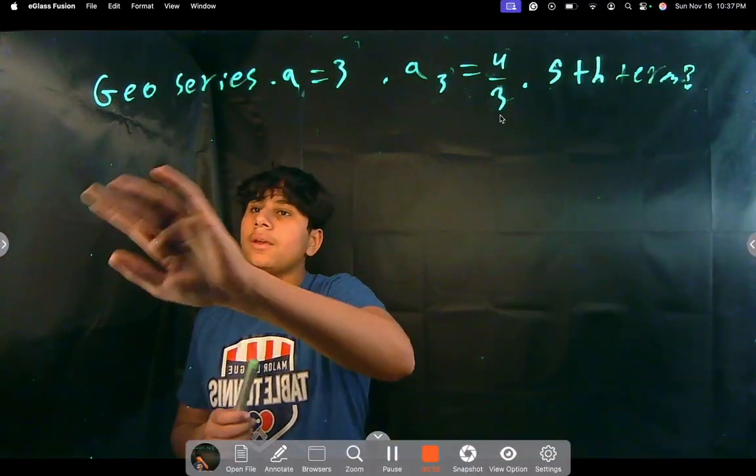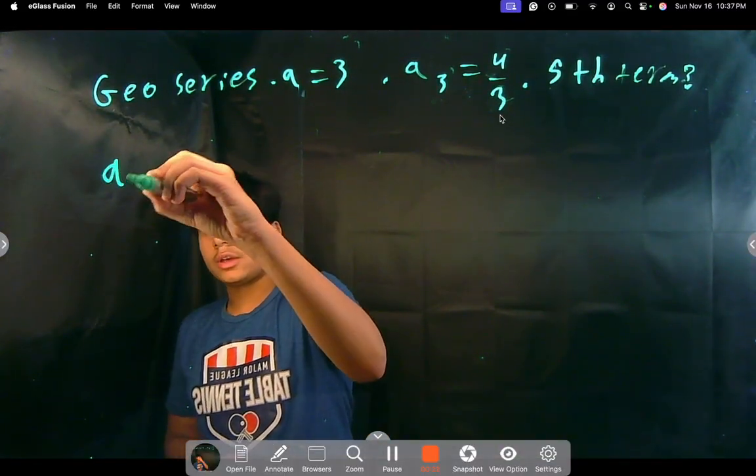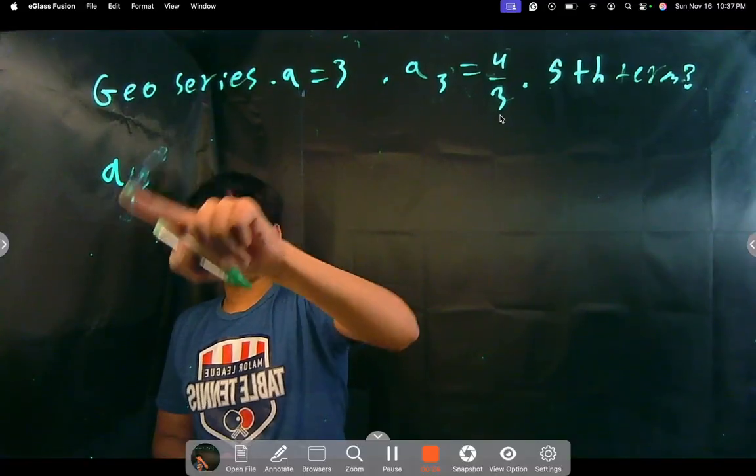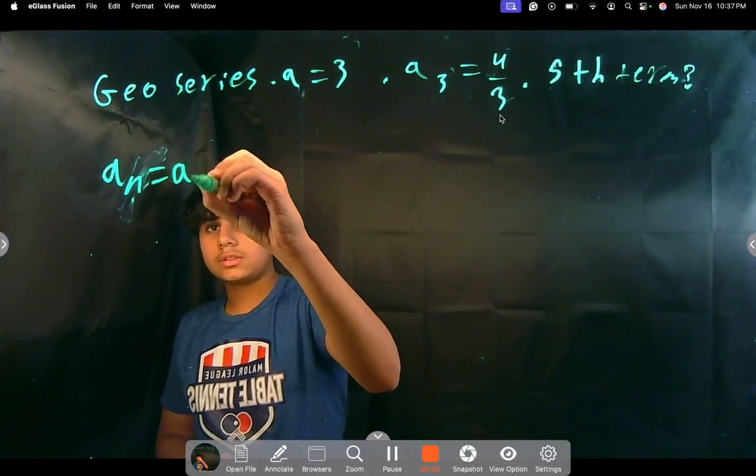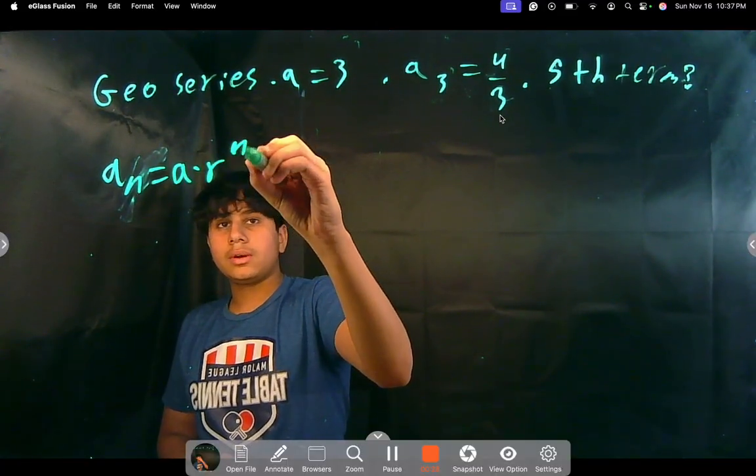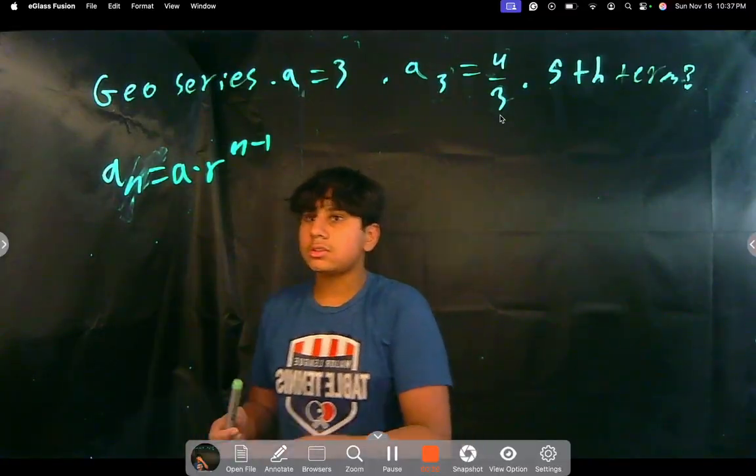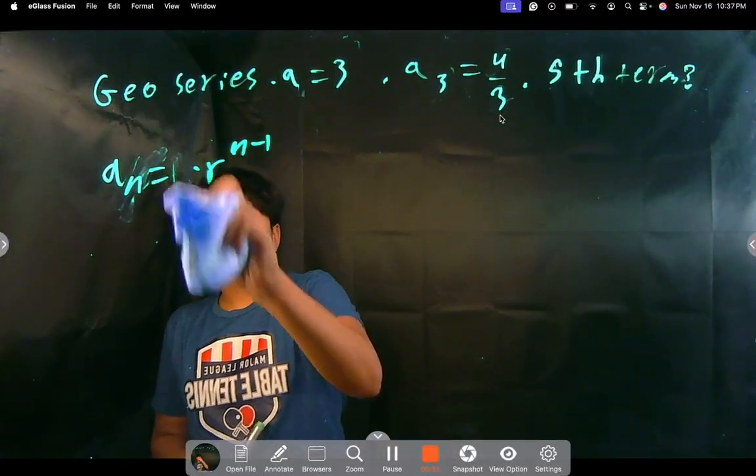Alright, so let's start by writing our generic formula. a sub n equals a times r to the n minus 1, right? Well, we can start substituting in our values, right? Because we know a is 3, right?